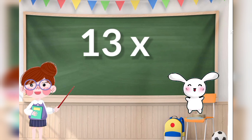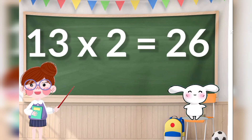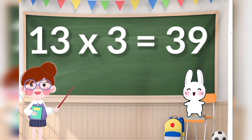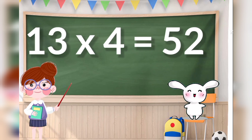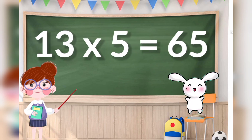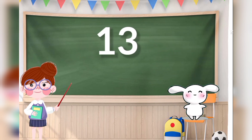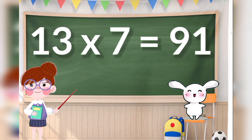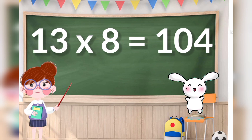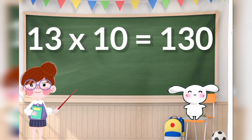13 ones are 13, 13 twos are 26, 13 threes are 39, 13 fours are 52, 13 fives are 65, 13 sixes are 78, 13 sevens are 91, 13 eights are 104, 13 nines are 117, 13 tens are 130.